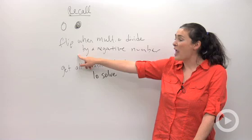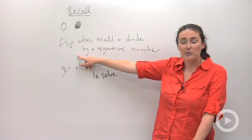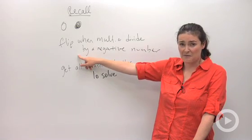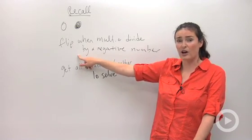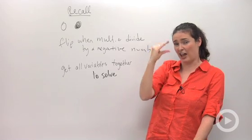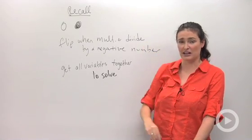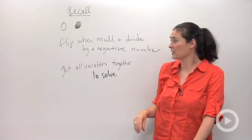Any time your solving involves multiplying or dividing by a negative value, you're going to have to change the direction of the inequality.